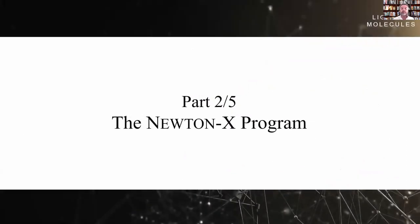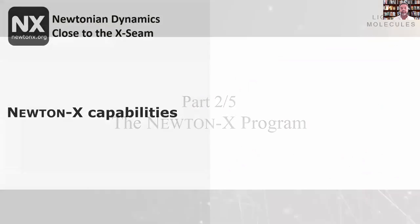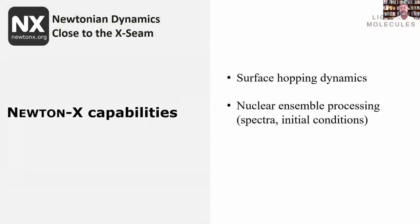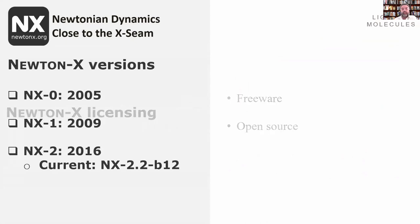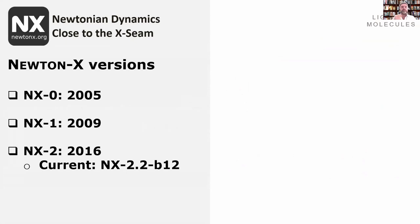So the Newton-X program is going to do that. It's mainly for doing surface hopping dynamics and processing nuclear ensembles of geometries like spectra or initial conditions. Finally, you do the data analysis also in Newton-X. Newton-X is a freeware and open source program. It has had three versions — version 0, 1, and 2. The latest one was released in 2016; right now we're at version 2.2.